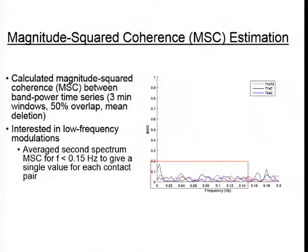We calculated magnitude squared coherence between these band power time series using three-minute windows and 50% overlap, with mean deletion performed on each individual segment. Because we were interested in low-frequency modulations, we averaged this second spectrum coherence for frequencies less than 0.15 Hz — shown as the box area in the example spectrum — to give a single value representing second spectrum relationships between each contact pair in a given frequency band.